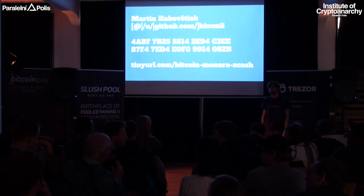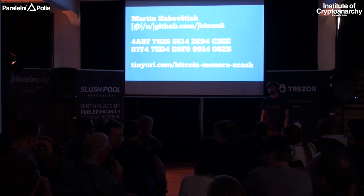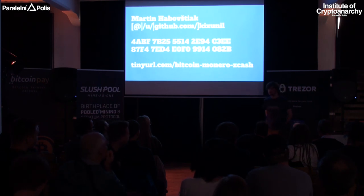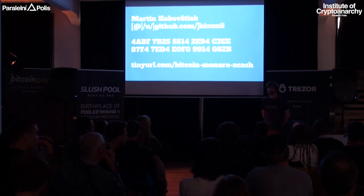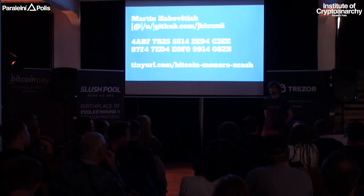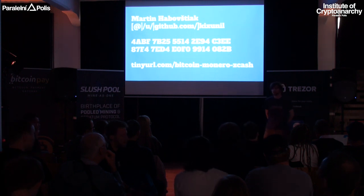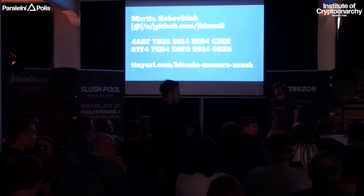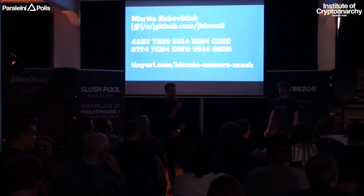Question: Can you give a rough idea of how much storage it takes to run a full node for each of the three? As far as I remember, Bitcoin had something about 100 gigabytes — I think around 140 with transaction indexing. I don't remember the exact numbers for Monero and Zcash, but you can Google it quite easily.